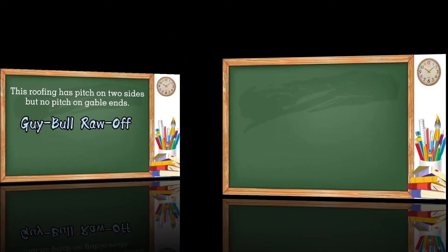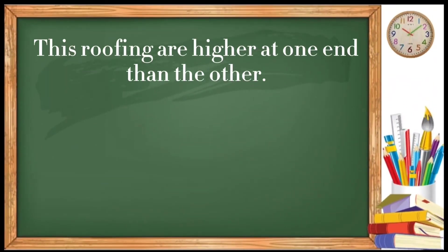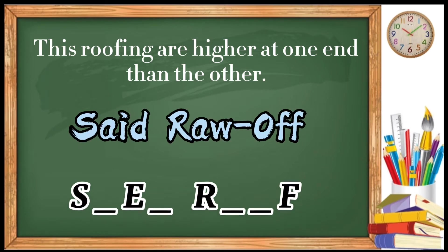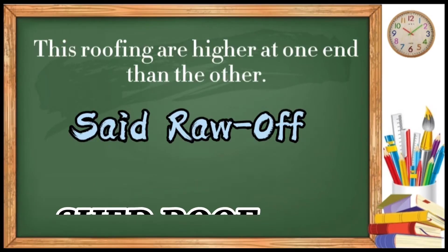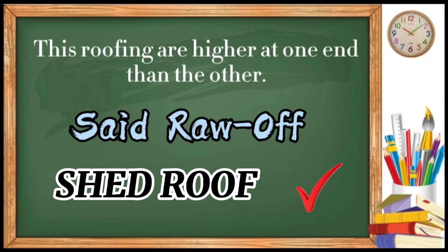Next, this roofing are higher at one end than the other. Here is the clue. Said, row, off. Said, row, off. Can you guess what is the answer? Great! This is a shed roof.